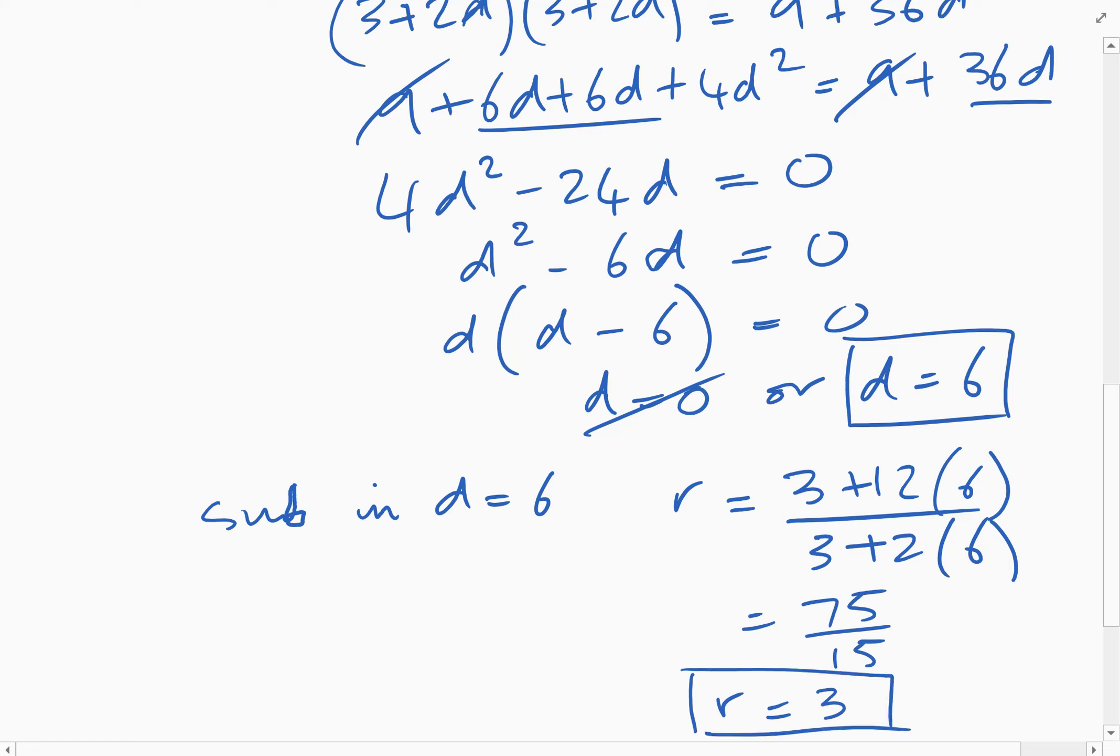So the common ratio of the geometric progression is five, and the common difference for the arithmetic progression or sequence is six.